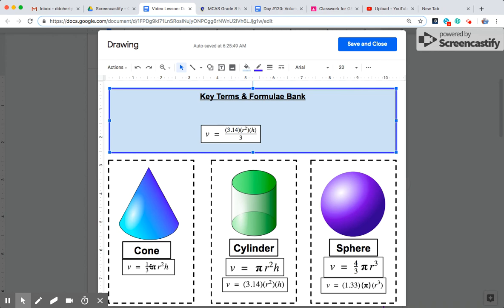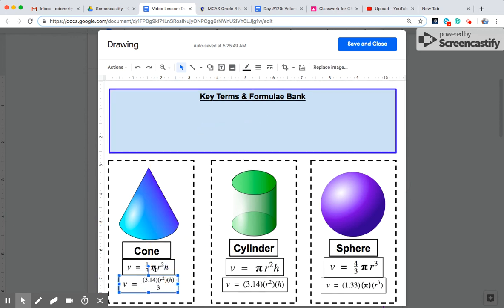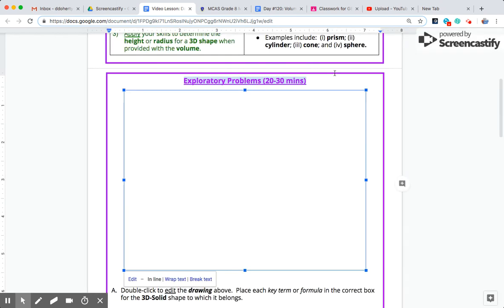So another way to represent this is to show pi as 3.14, and instead of timesing by 1 third, that's equivalent to dividing everything by 3. So that's part A.